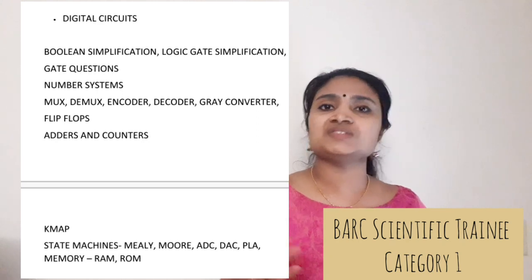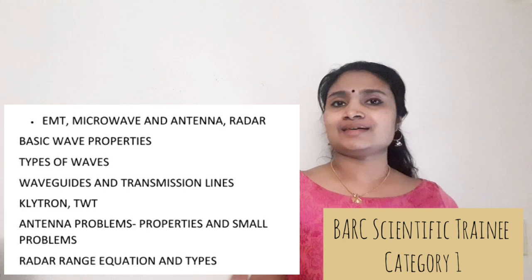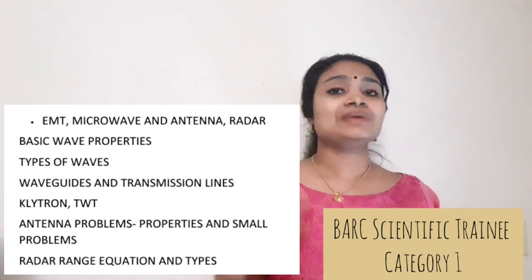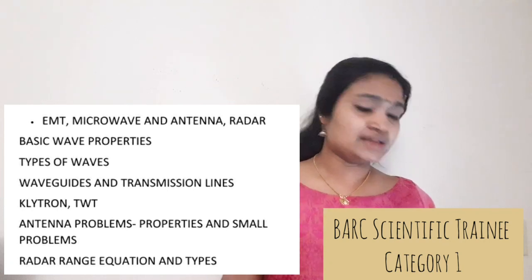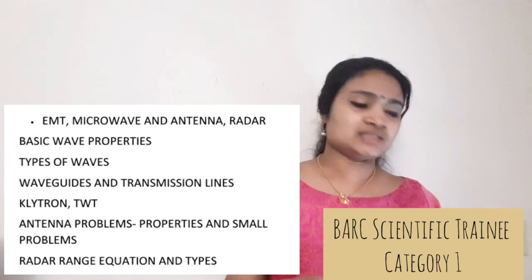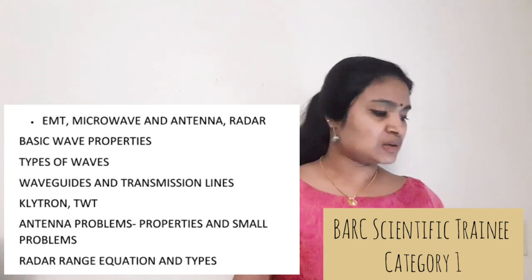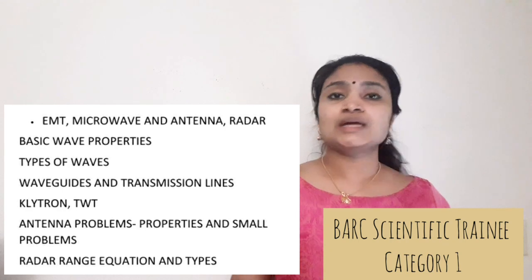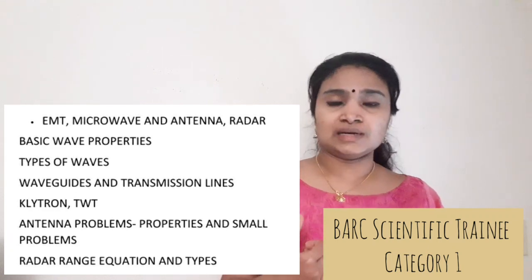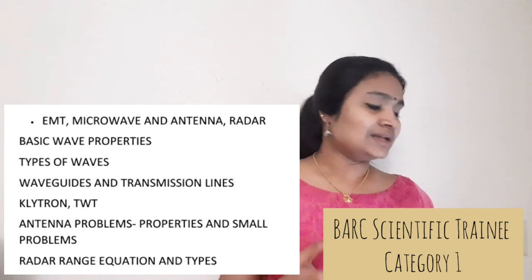EMT, Microwave, Antenna, and Radar are grouped together. From EMT, study basic wave properties, types of waves, waveguides, and transmission lines. From Microwave, study klystron, TWT, and some microwave devices. Antenna is a very important area — antenna problems, properties, and types of antennas. Radar is also very important — various types of radar, radar problems, and the radar range equation, since questions may ask about the effect on range when one variable changes.